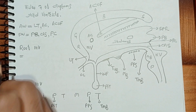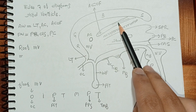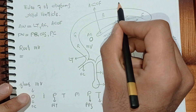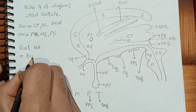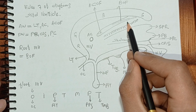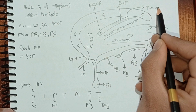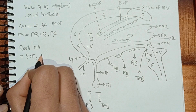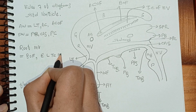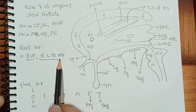Now we will name the structures that form the roof of the third ventricle. There are two structures: this structure is the body of the fornix. The roof is formed by the body of the fornix, and below the body of the fornix there is a structure called the tela choroidea of the third ventricle. The tela choroidea of the third ventricle is lined by ependyma. So the roof of the third ventricle is formed by the body of the fornix and the ependyma lining the tela choroidea of the third ventricle.